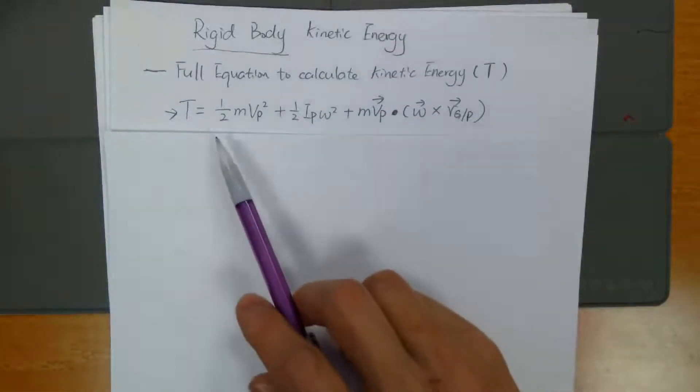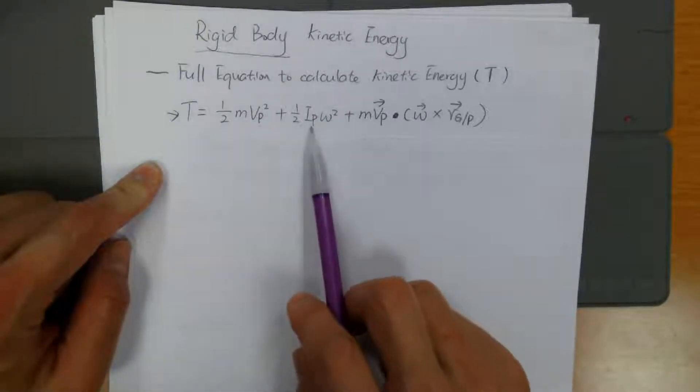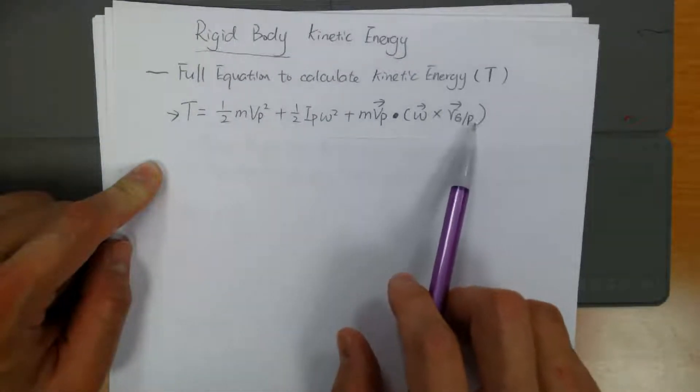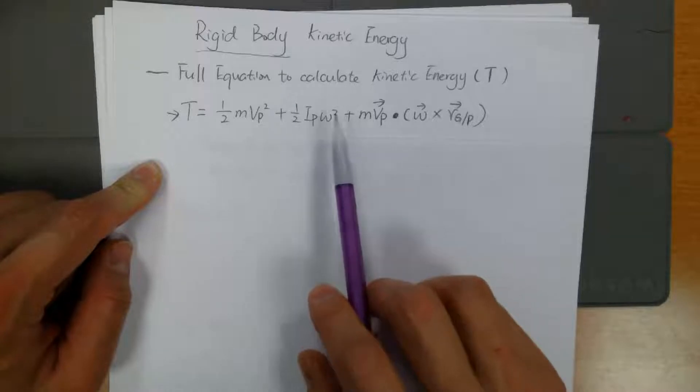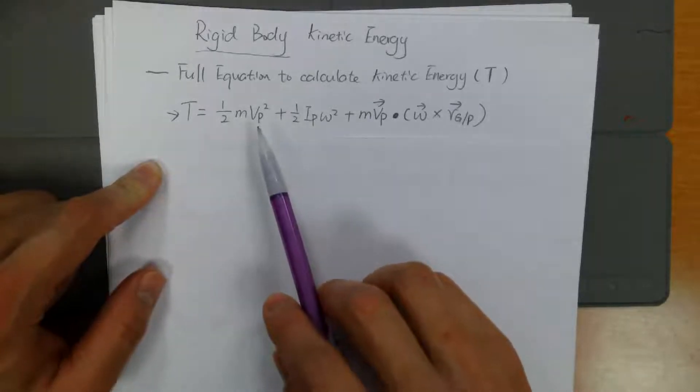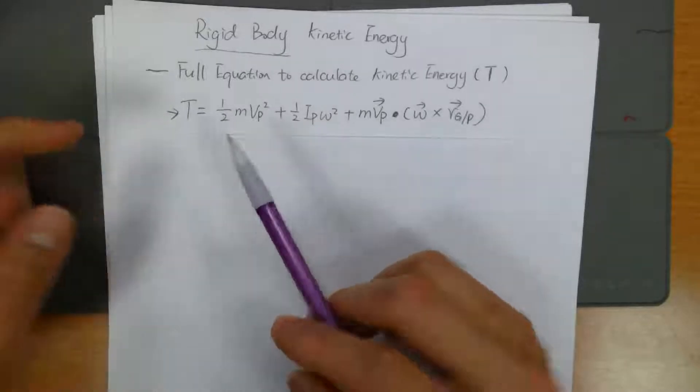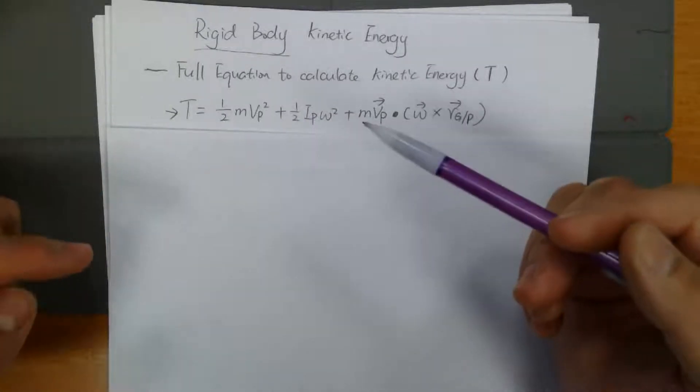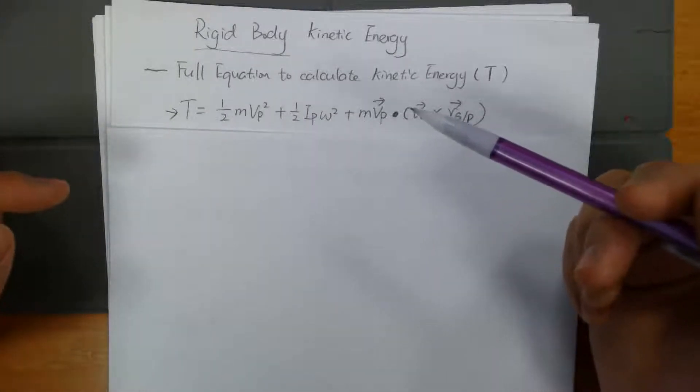So if we look at this equation, we have three different terms. And we have a letter P that states the point you're trying to find this kinetic energy. So you need to pick a point that you want to calculate kinetic energy.